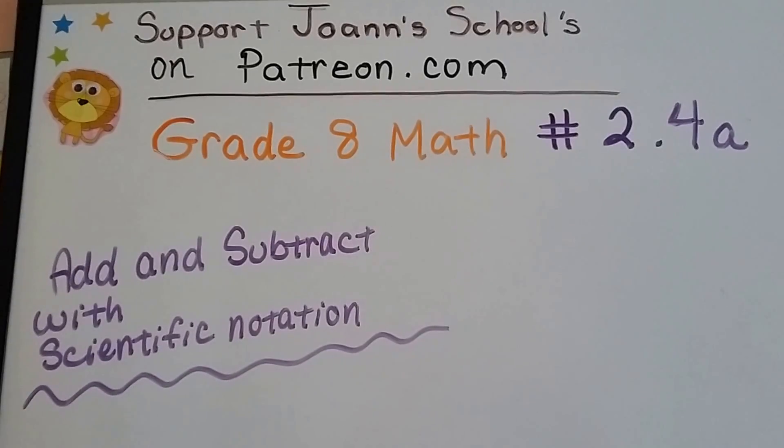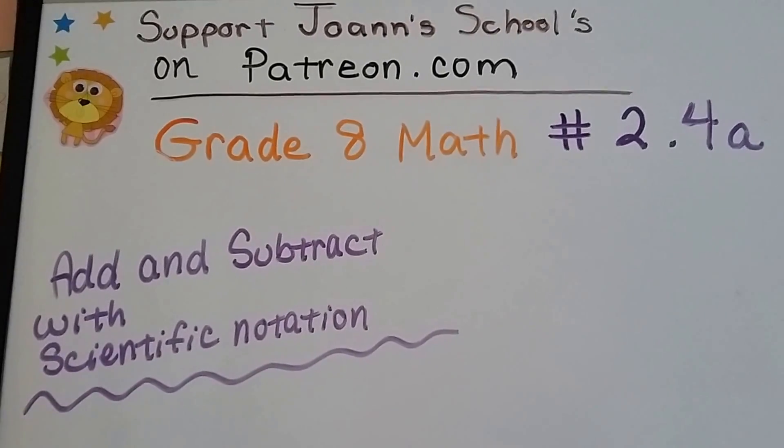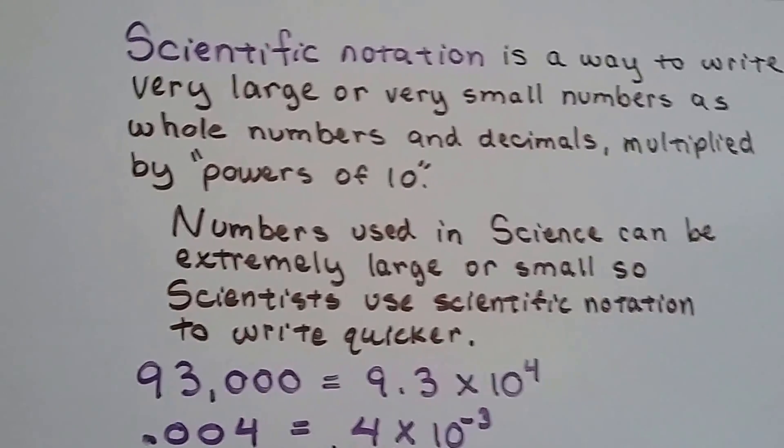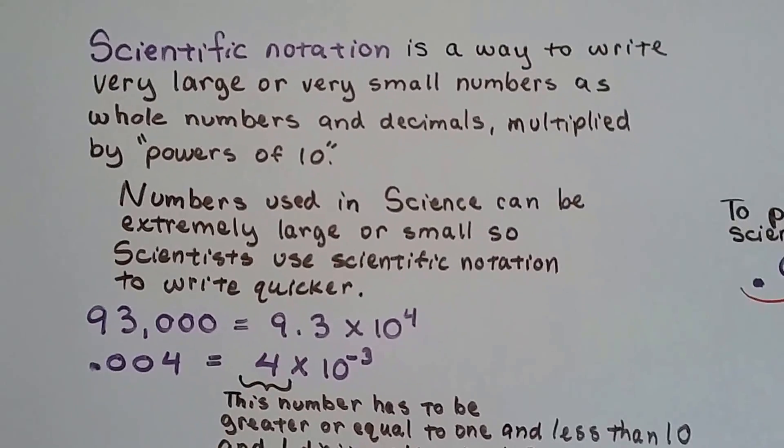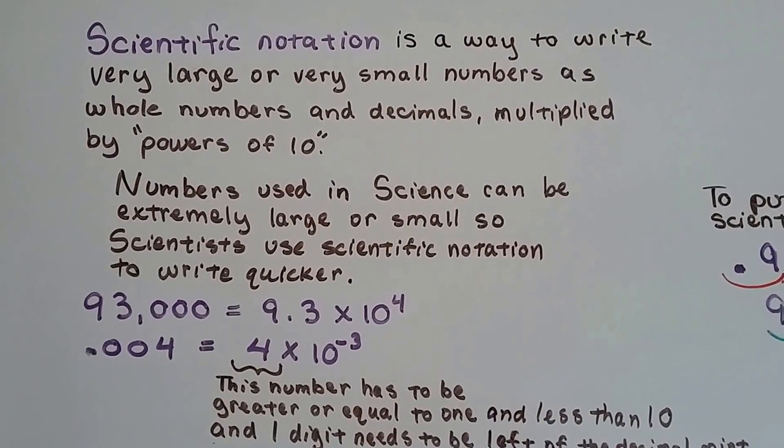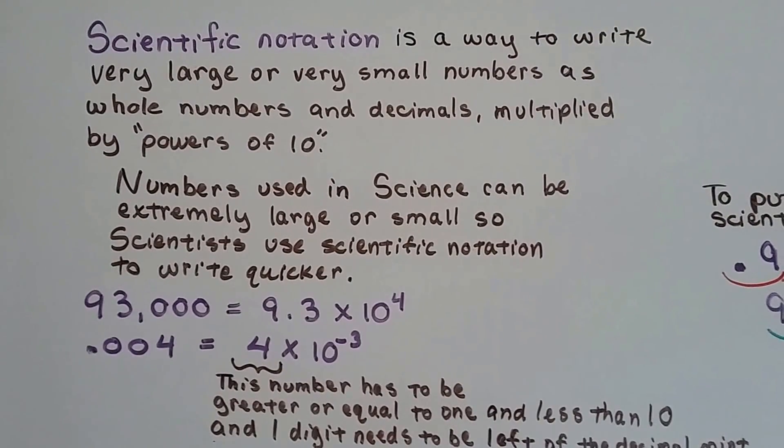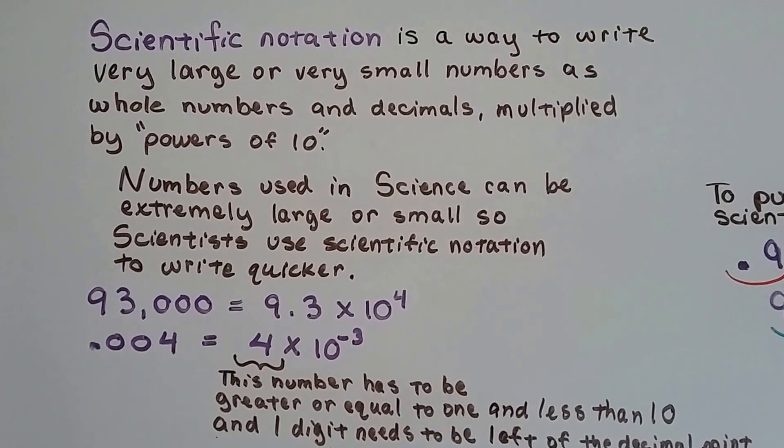Grade 8 Math Number 2.4a: Add and Subtract with Scientific Notation. As I've told you before in previous videos, scientific notation is a way to write very large or very small numbers as whole numbers and decimals multiplied by powers of 10.